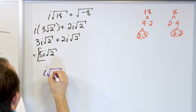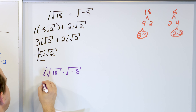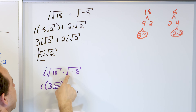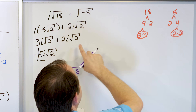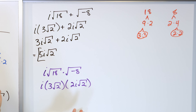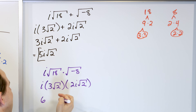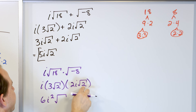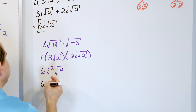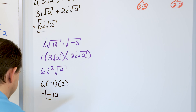Now let's change that addition to multiplication: i times the square root of 18, multiplied by the square root of negative 8. We already know root 18 is 3 root 2, so we have i times 3 root 2. The square root of negative 8 is 2 times i times root 2. Multiplying coefficients: 3 times 2 is 6. i times i is i squared. The radicals: root 2 times root 2 gives root 4 under the radical. So we have 6 times i squared times root 4. i squared is negative 1 and root 4 is 2, giving us negative 6 times 2 which is negative 12. The final answer is negative 12.